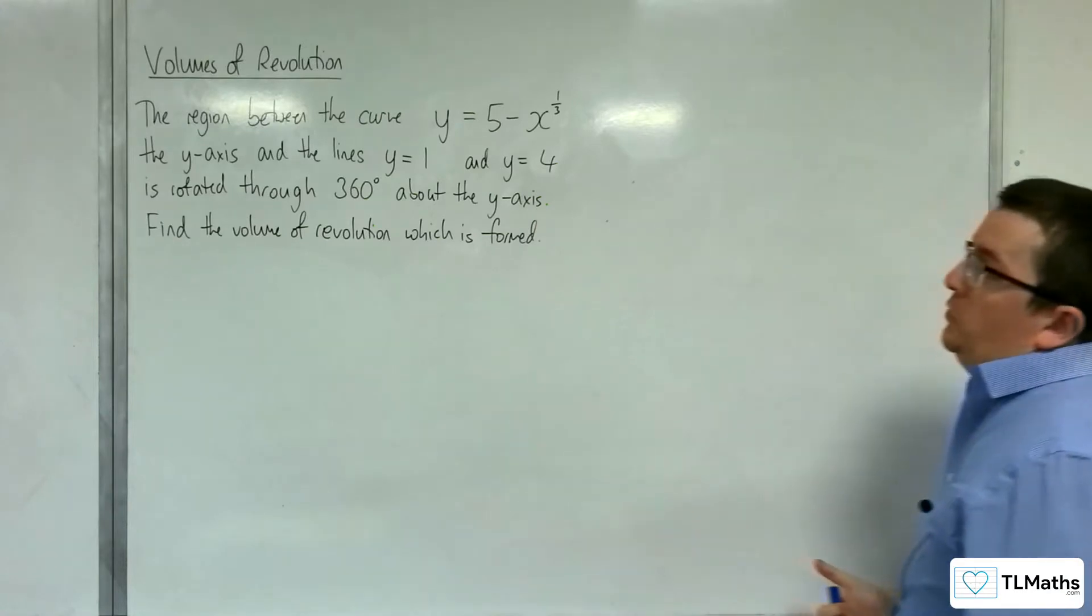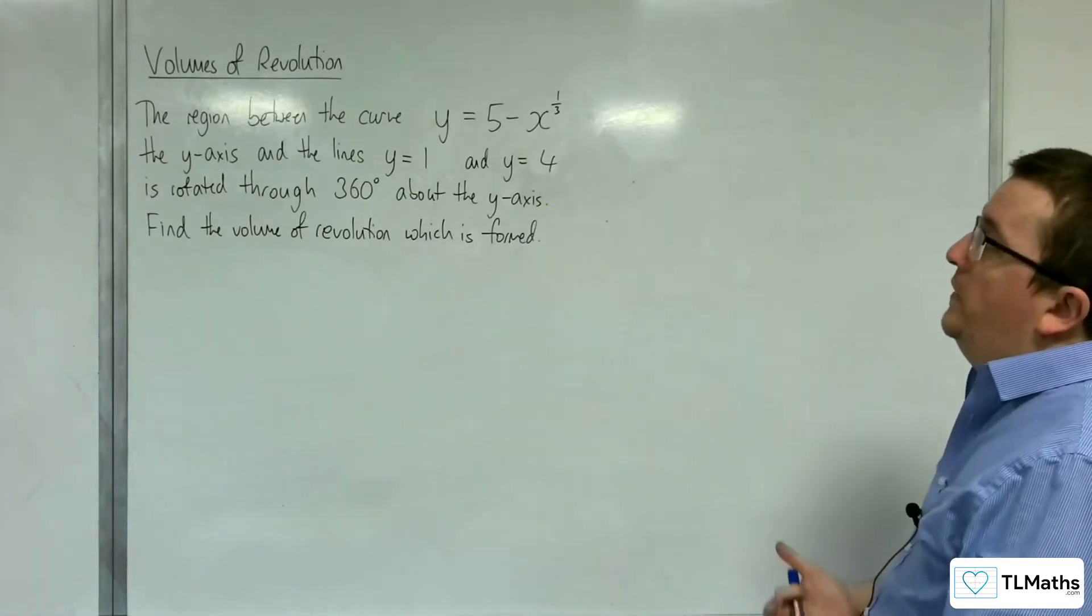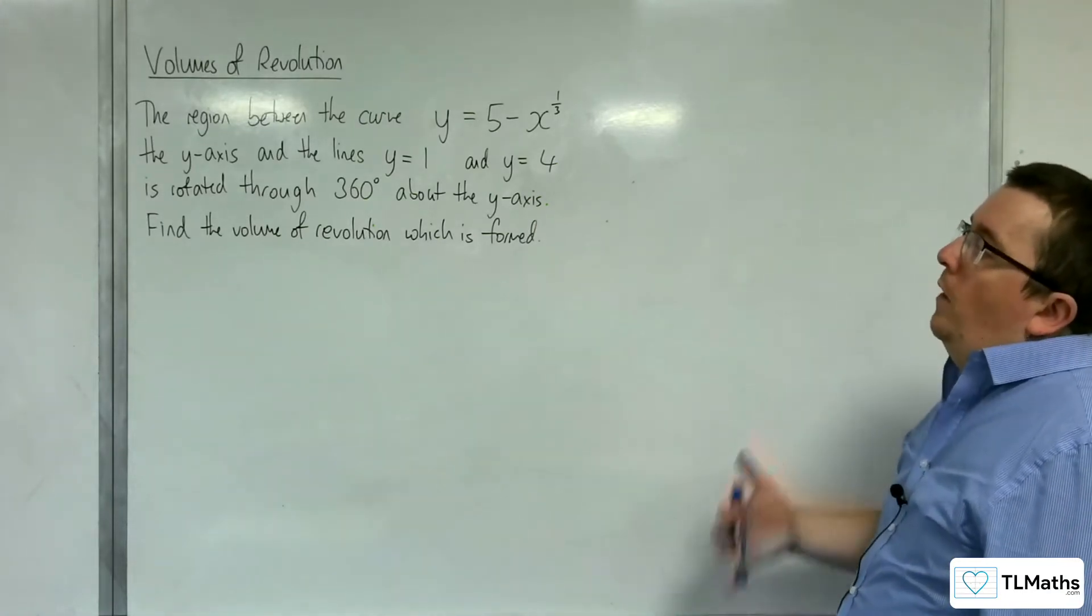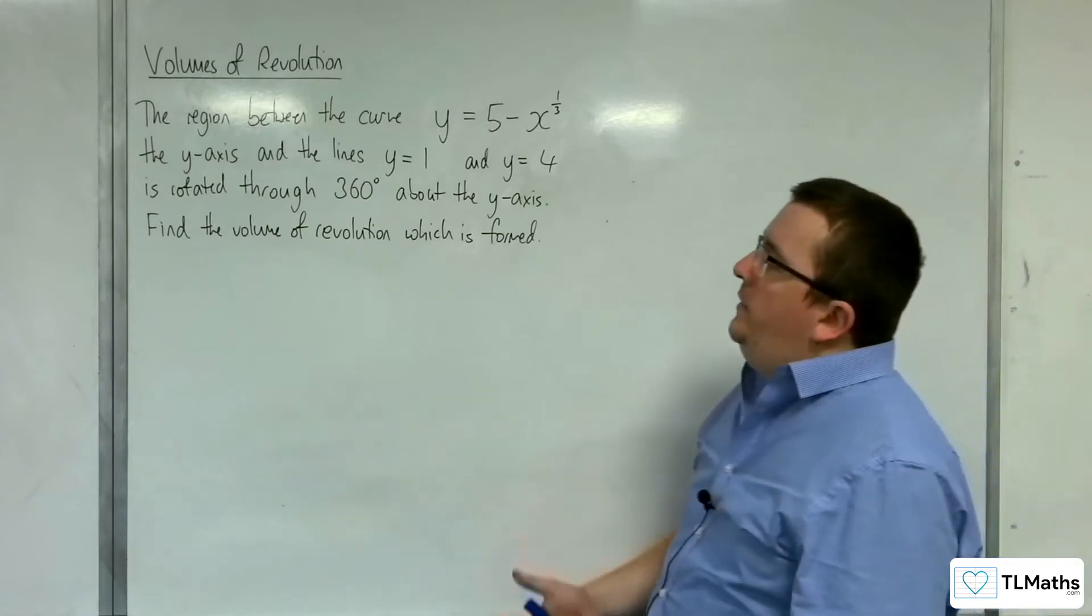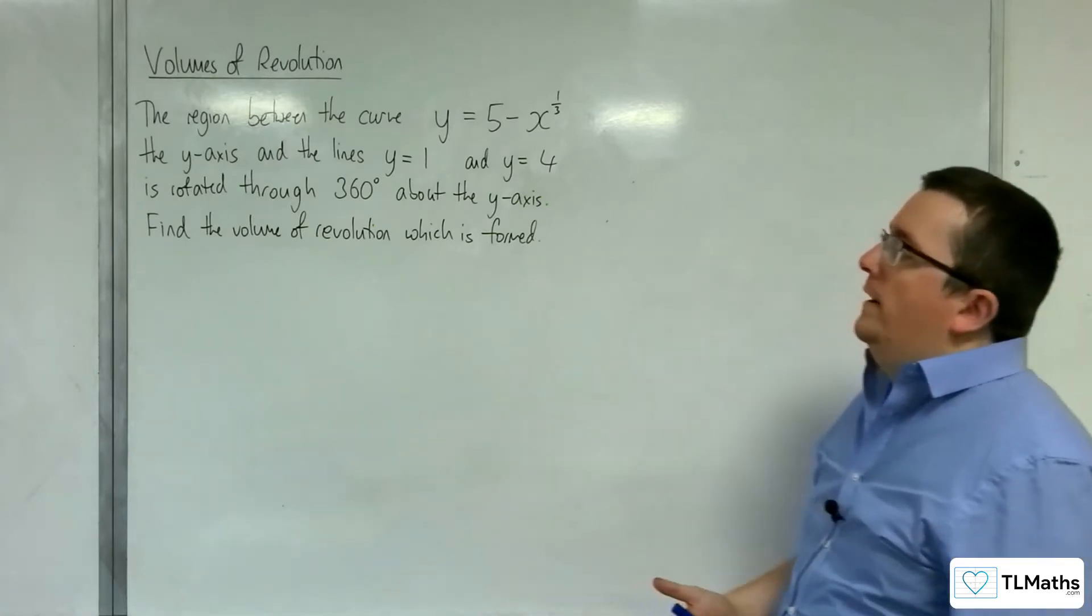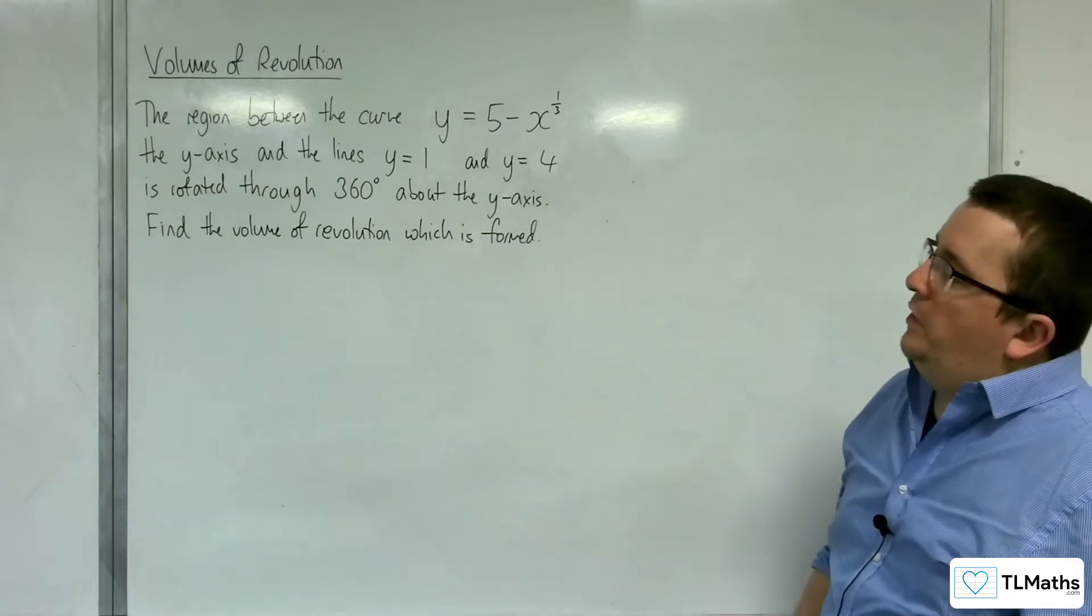In this video, the region between the curve y equals 5 take away the cube root of x, the y-axis, and the lines y equals 1 and y equals 4, is rotated through 360 degrees about the y-axis. Find the volume of revolution which is formed.